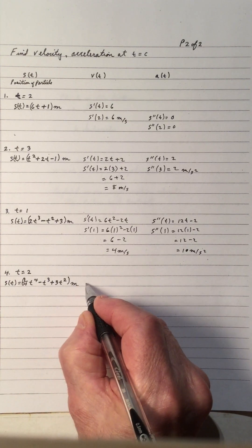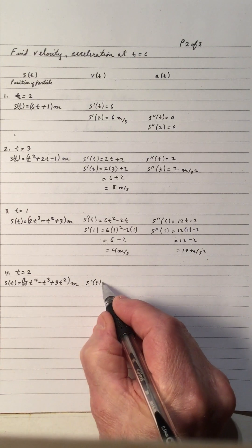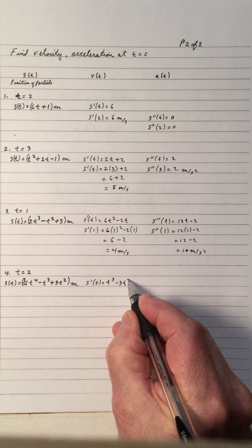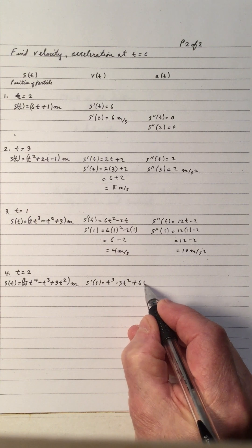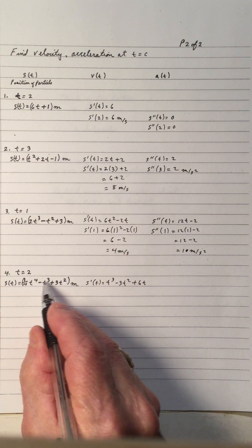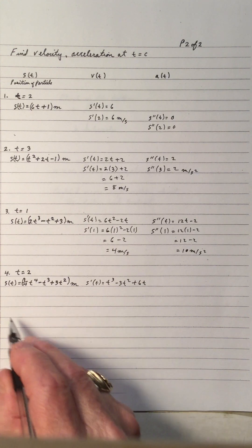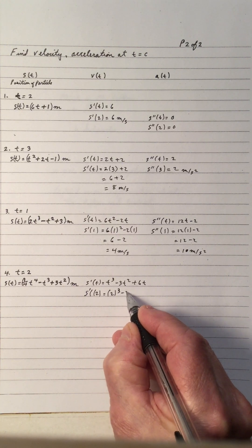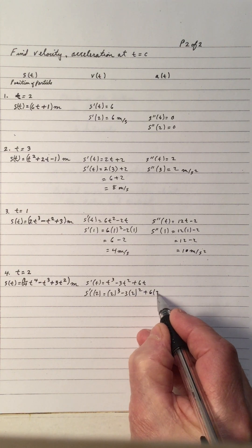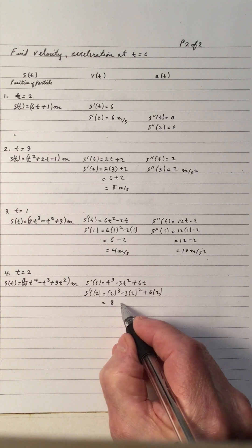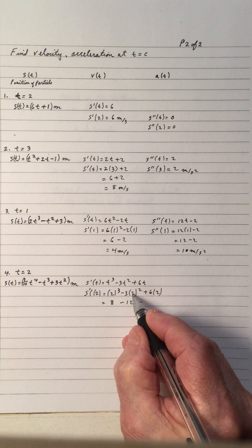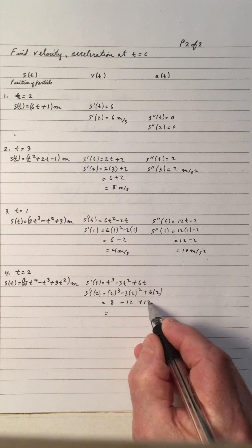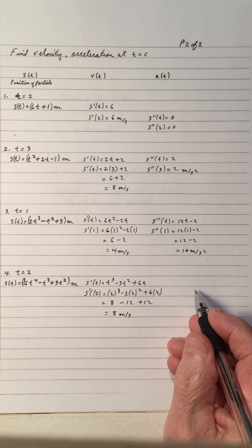For number 4, we find the derivative of s. We have 4 times one-quarter giving t cubed, negative 1 times 3 giving negative 3t squared, and 3 times 2 giving 6t. Notice the exponents drop by 1 each time — it's the power times the coefficient, dropping the exponent by 1. We want s prime at 2 seconds, so we substitute t equals 2: 2 cubed is 8, 2 squared is 4, negative 3 times 4 is negative 12, plus 12 gives 0, so the result is 8 meters per second. That's the velocity at 2 seconds.